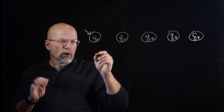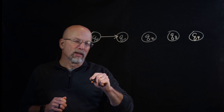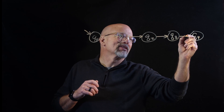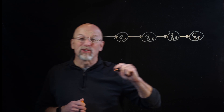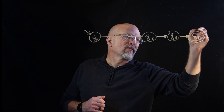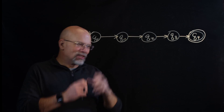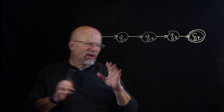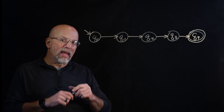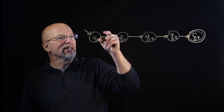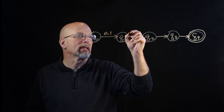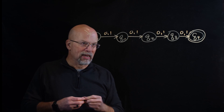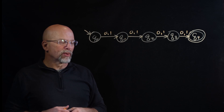If I receive a zero or a one, that takes me to the next state — I know I've got one digit. Then I receive another zero or one and go to the next state, and another, and another, until I get to the last state. The last state is identified with a double circle. On each arrow I label that a zero or a one will take me to the next state.